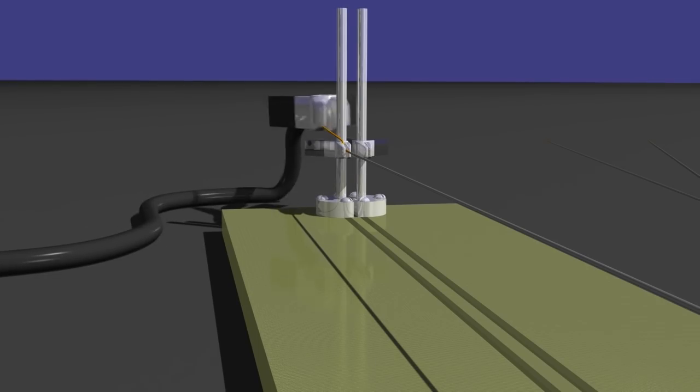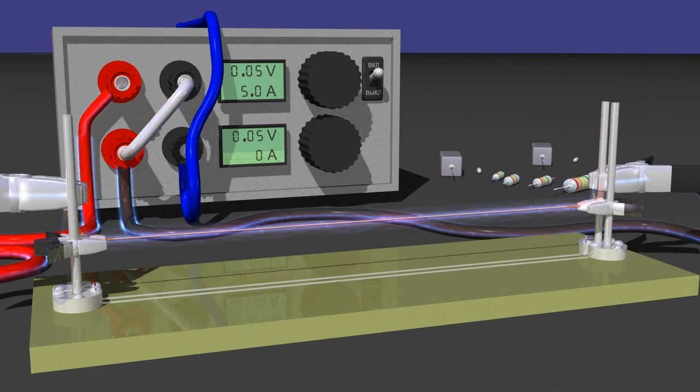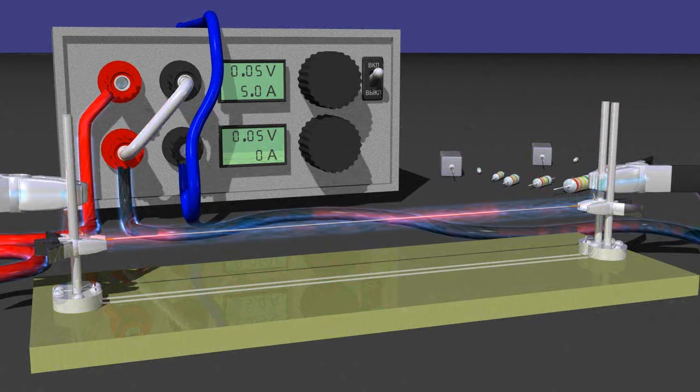We connect power supply wires to the columns. The output voltage of power supply is zero and after you switch it on nothing happens. But when we turn the output voltage regulator, the current starts flowing through the conductor. In this case the output voltage is 0.05 volts and the current is 5 amperes.